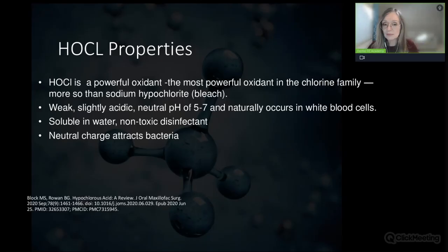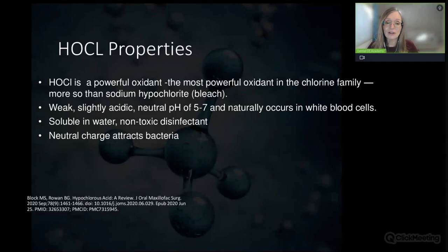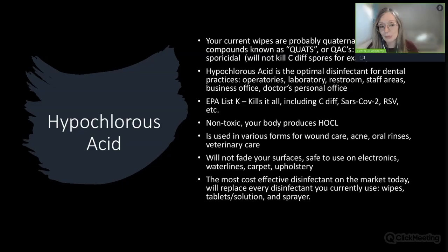Hypochlorous acid's properties: it's a powerful oxidant, the most powerful in the chlorine family, more so than bleach—sodium hypochlorite. It has a weak, slightly acidic neutral pH of 5 to 7 and naturally occurs in white blood cells. You want to use a product as near neutral pH as possible. It is soluble in water and a non-toxic disinfectant. Your current quaternary ammonium compound wipes are not sporicidal—they won't kill C. difficile spores.